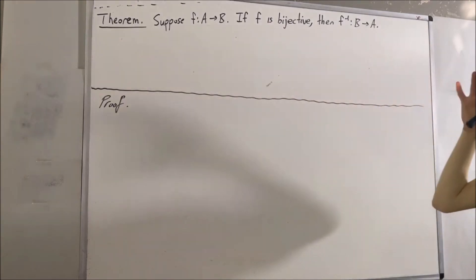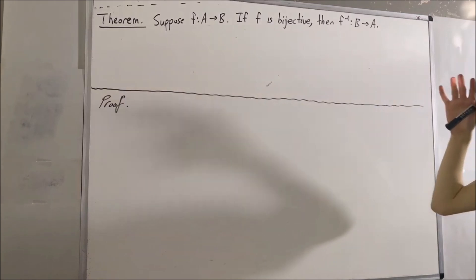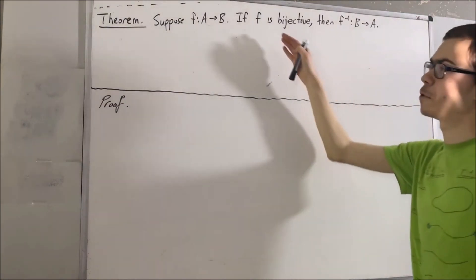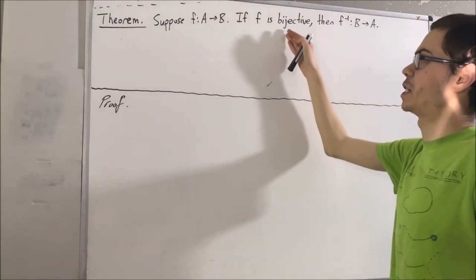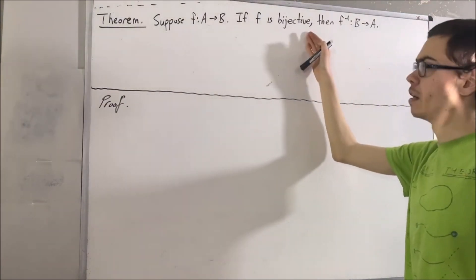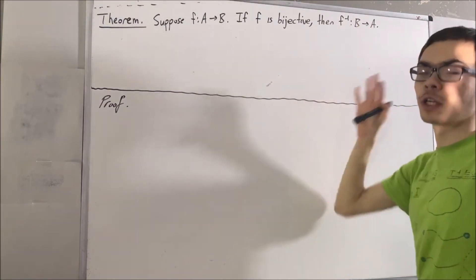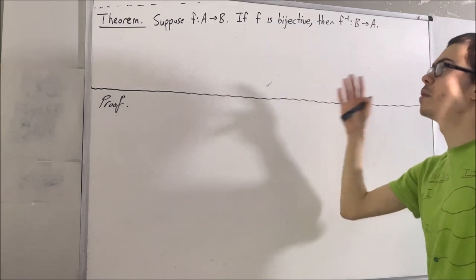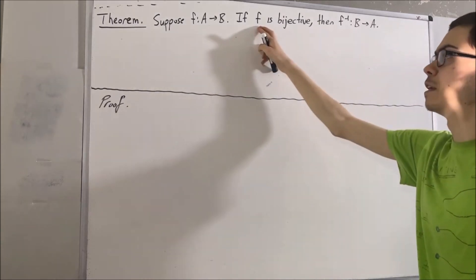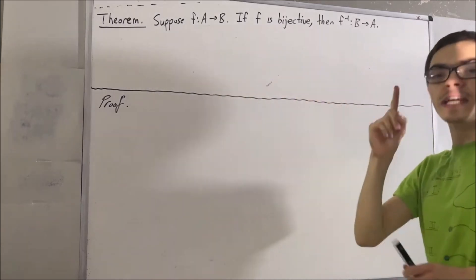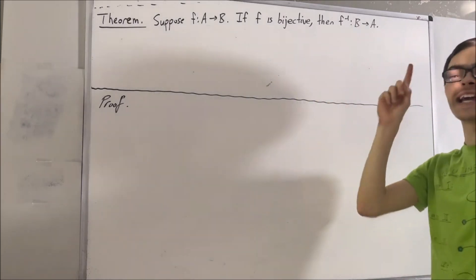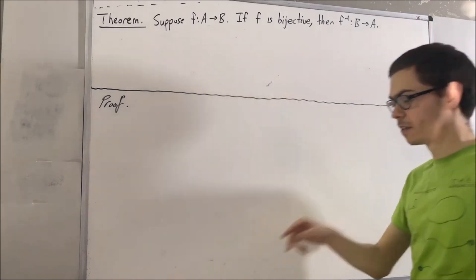So first of all, what does it mean for a function to be bijective? Well, if you recall, all that means is that our function f is both injective and surjective.